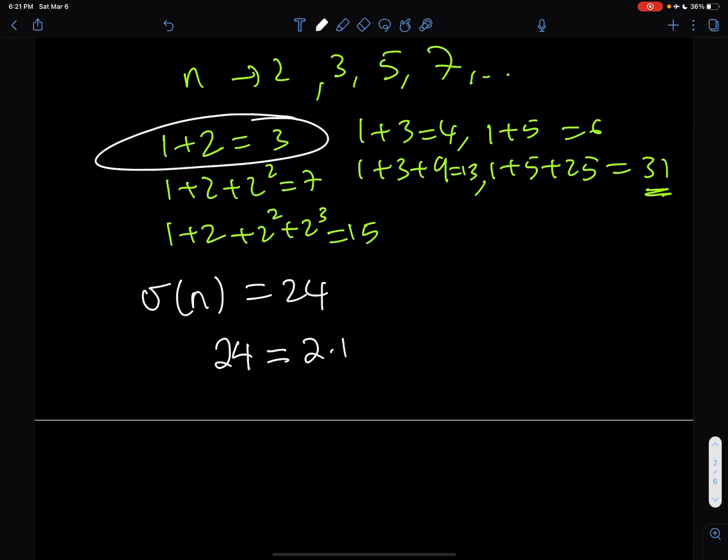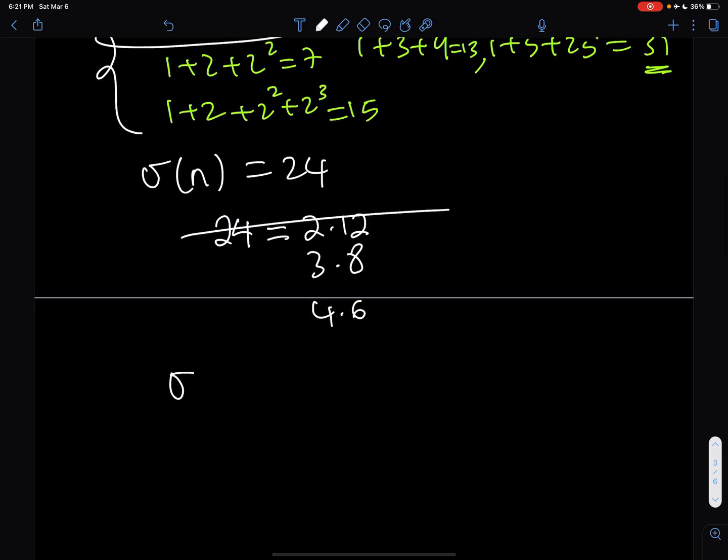How can I form 24? Well there is only a number of ways to factor 24. 1 times 24 is not going to help you because the lowest one you can get is 3. But 24 can be factored as 2 times 12 or 3 times 8 or 4 times 6.